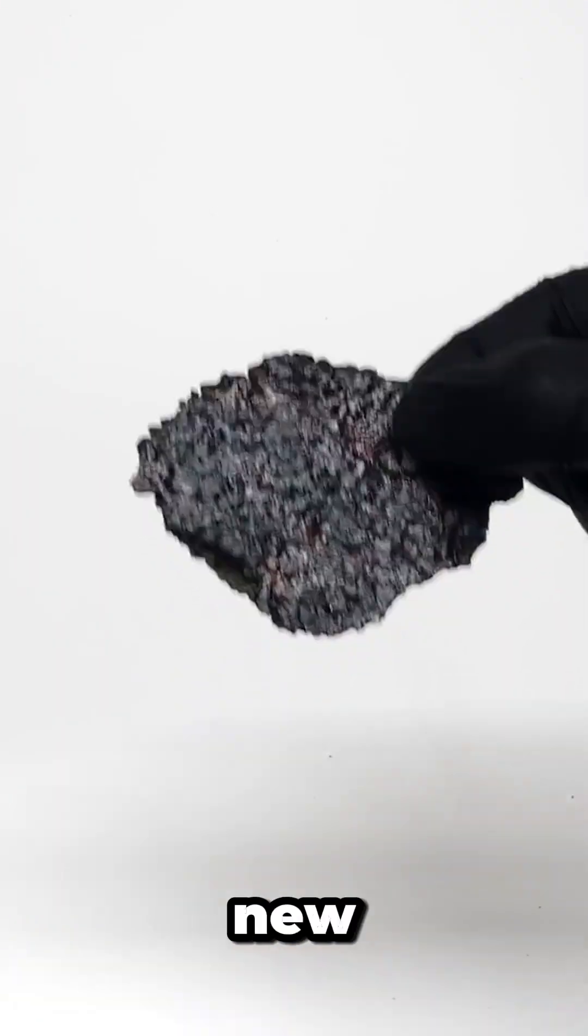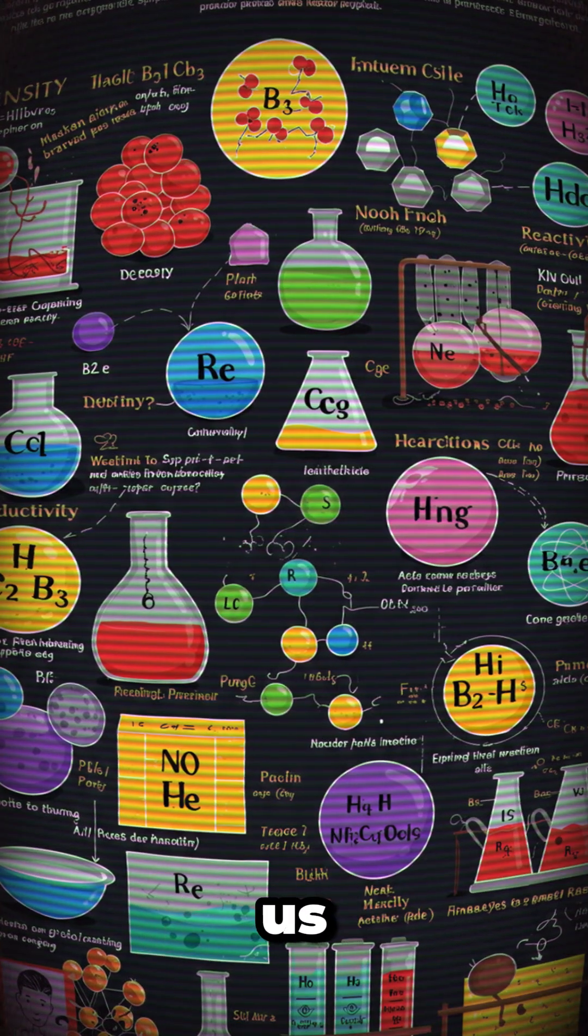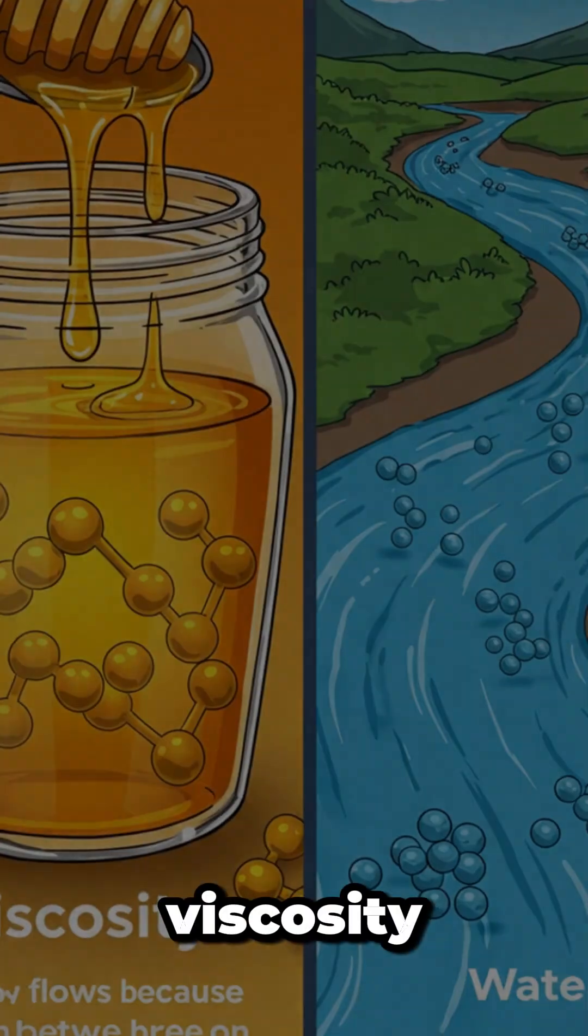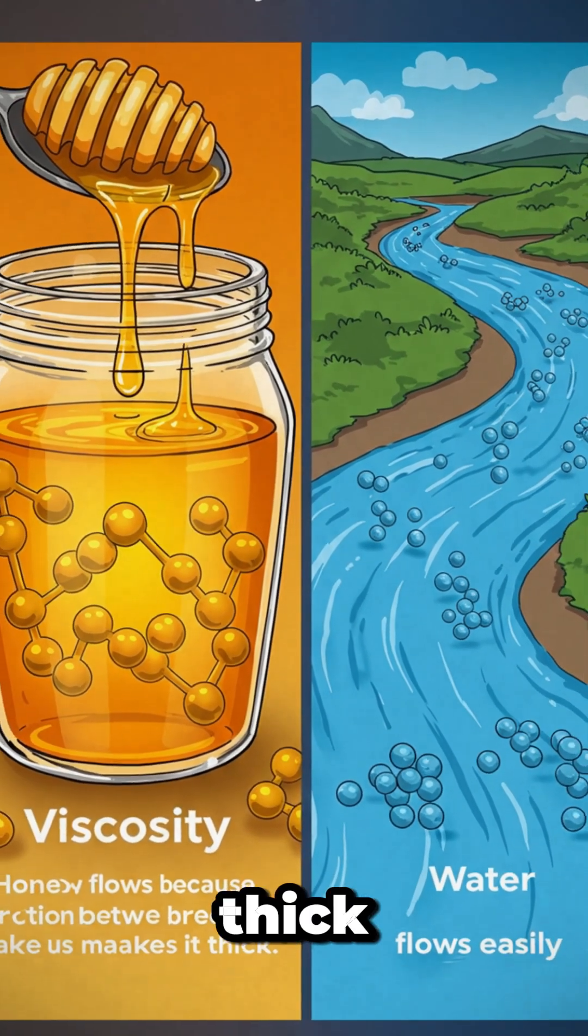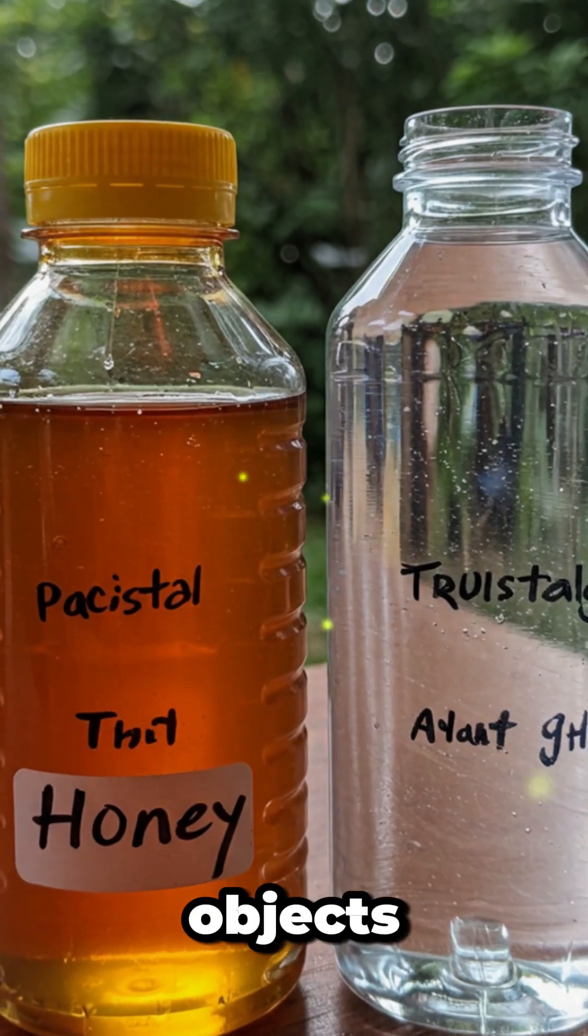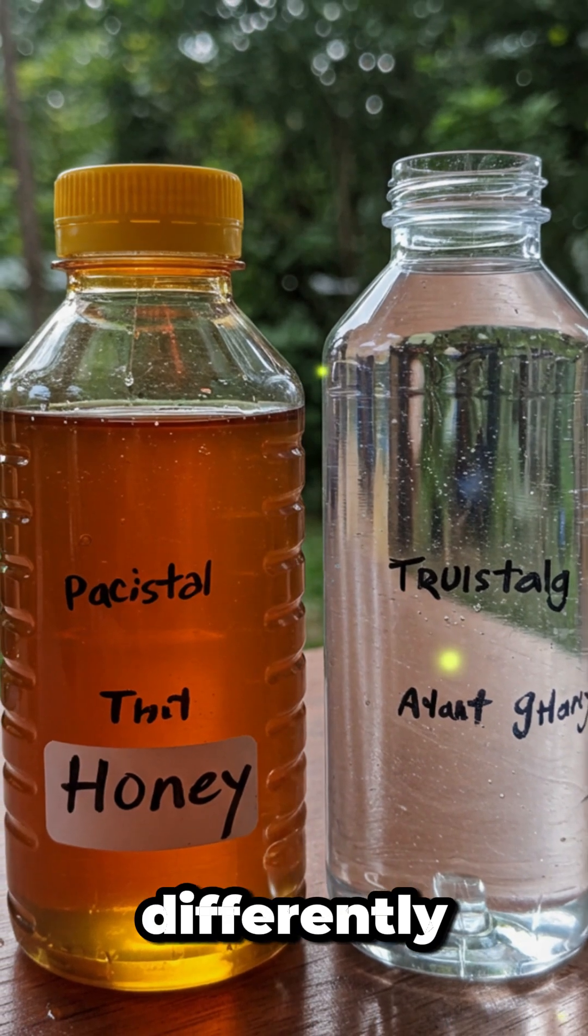Matter has amazing properties that help us identify and use it. Viscosity: honey flows slowly because friction between molecules makes it thick, while water flows easily. Density: two objects the same size can weigh differently - the denser one has more matter packed into the same space.